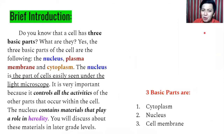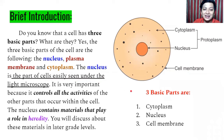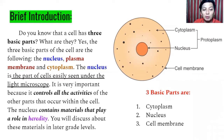Do you know that a cell has three basic parts? We have nucleus, plasma membrane, and cytoplasm. This is the cytoplasm, the nucleus, and the cell membrane. The nucleus is the part of the cell most easily seen under the light microscope. It is very important because it controls all the activities of the other parts that occur within the cell.